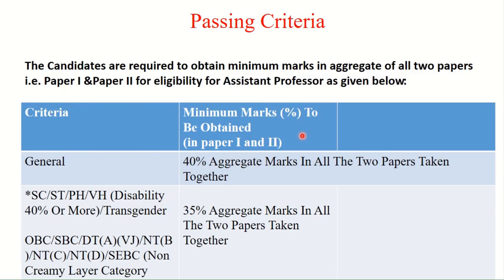Now the passing criteria: previously there was separate passing for each paper — 40 percent in paper one, 40 percent in paper two, and 50 percent passing criteria in paper three. But now there is a 40 percent aggregate marks in both papers taken together. There is no requirement to pass paper one and paper two separately. Additionally, a cut-off rule applies: only the top 6 percent of appearing candidates will pass the SET exam. For general category, 40 percent aggregate is required; for SC, ST, PH, VH, OBC, SBC, and DT categories, only 35 percent aggregate marks in two papers taken together is required.